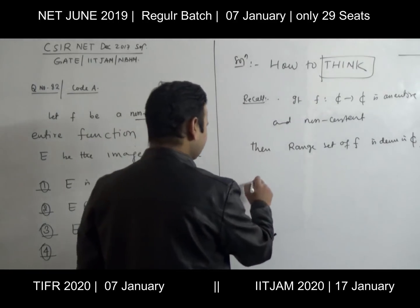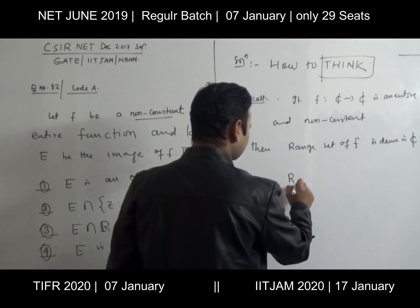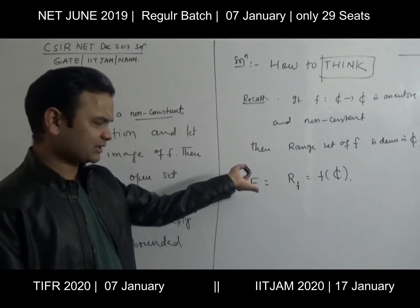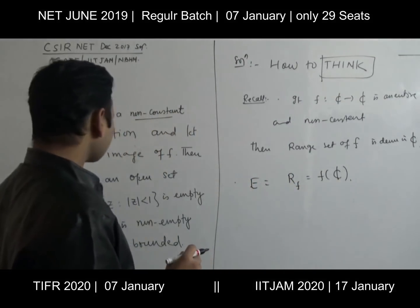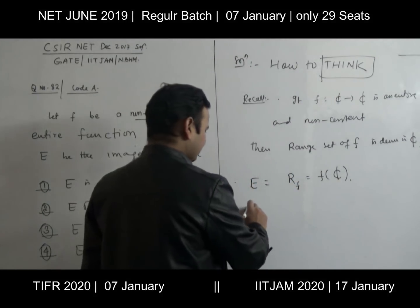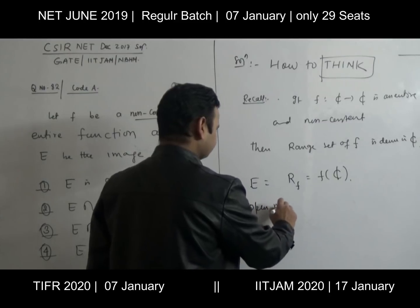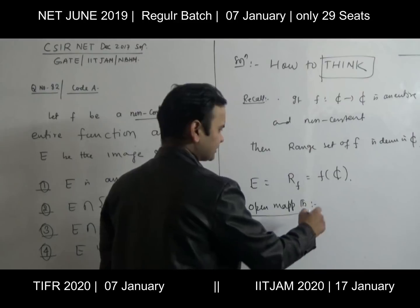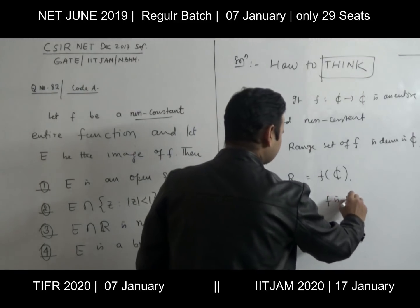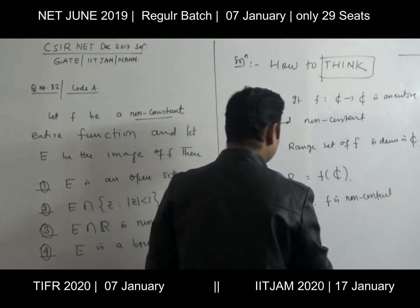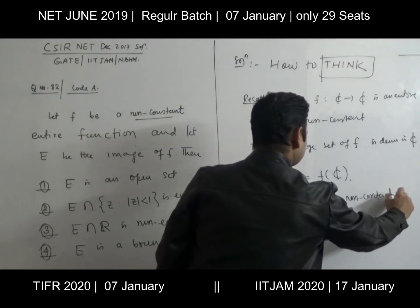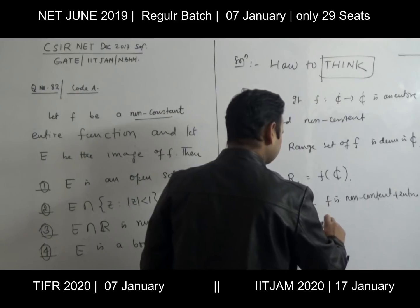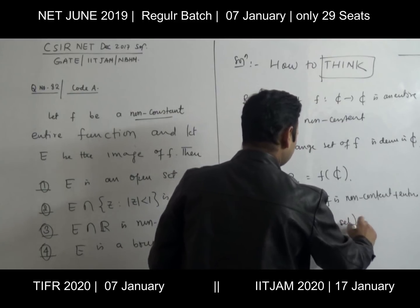So here E is your range set — the range set is F of C, your complex domain. Since F is non-constant, E will be dense. Now let's also recall the Open Mapping Theorem. If F is non-constant entire, then the image of any open set under F is open.